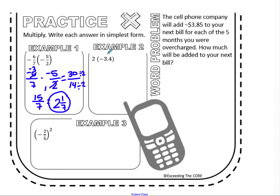Let's take a look at example 2: 2 times negative 3 and 4 tenths. When multiplying with decimals, you want the number with more place values to go on top. This one happens to have the greater absolute value and the most digits, so negative 3 and 4 tenths goes on top. Unlike addition and subtraction with decimals, for multiplication you do not line up the decimal points — you line up the last digit. So this 4 and the 2 are lining up. I know my answer is going to be negative because I have different signs.